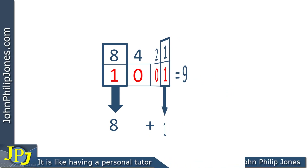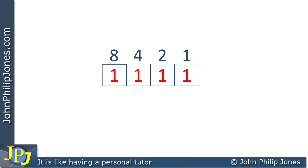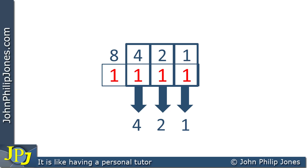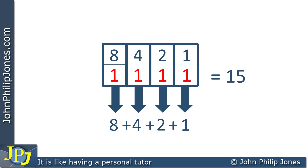Let's consider another example where there is a one in every position. The value is 15. You write down the one, there's a one in the twos position so you write two, a one in the fours position so you write four, and a one in the eights position so you write eight. Adding all of these up gives the value of 15.